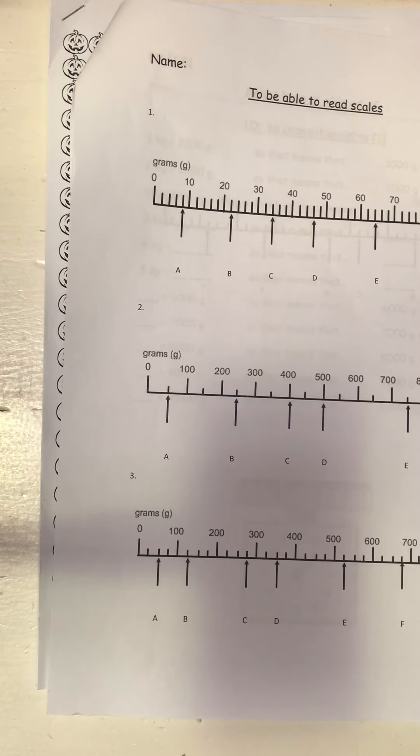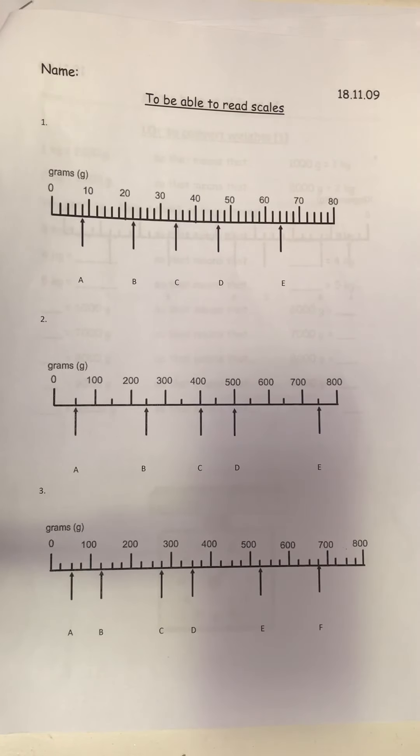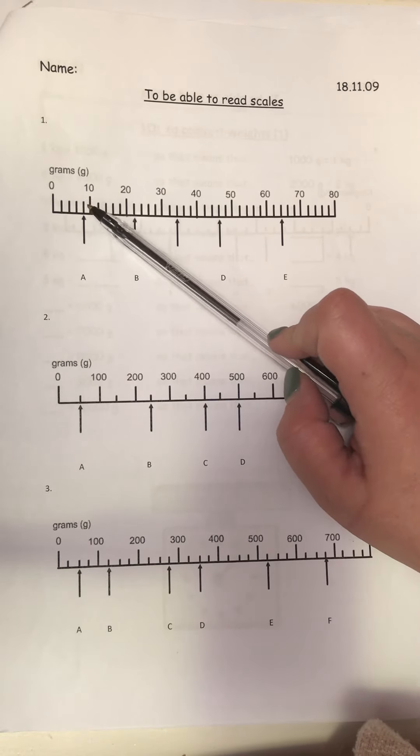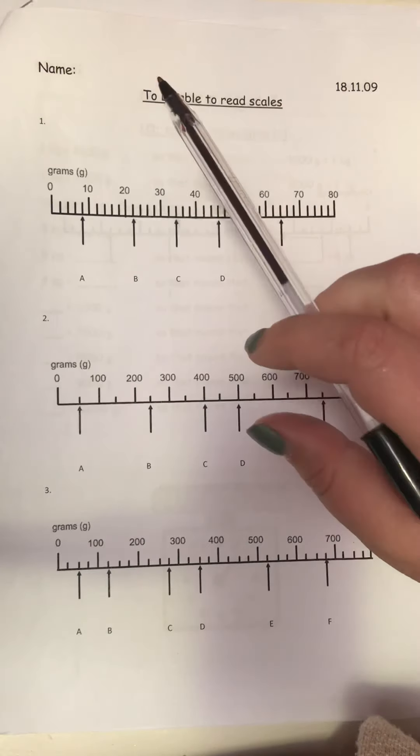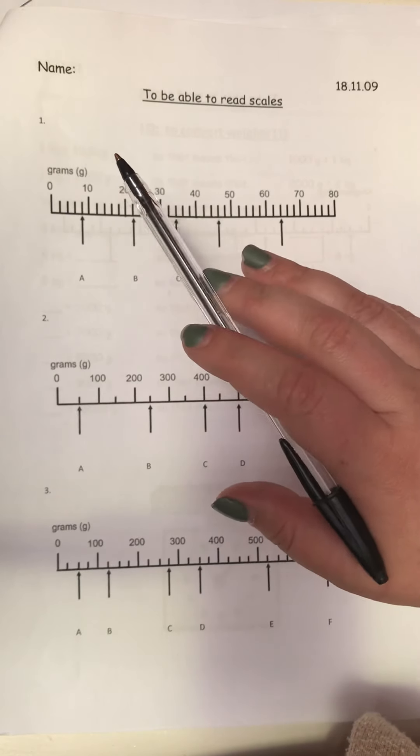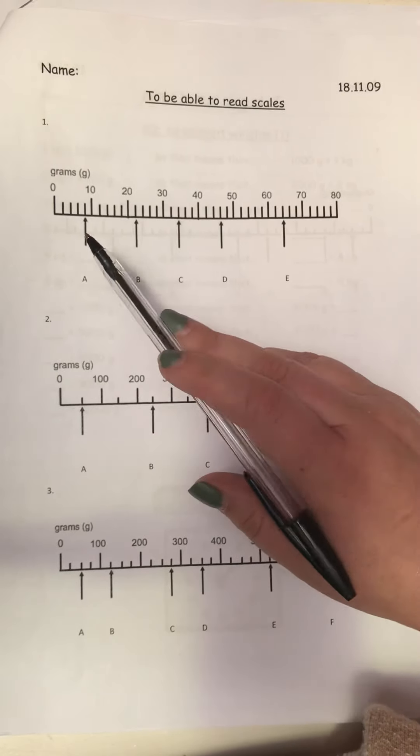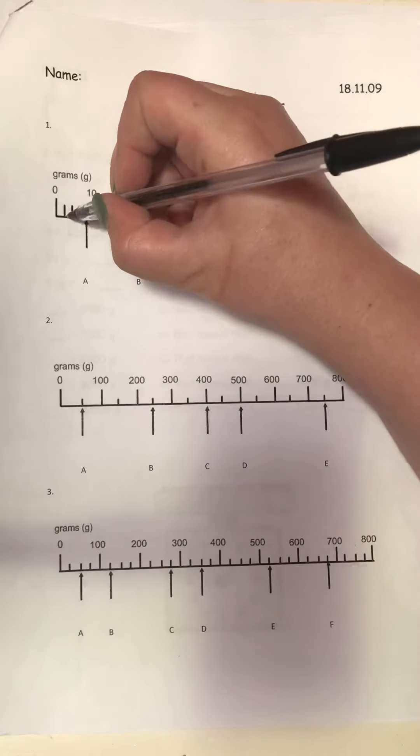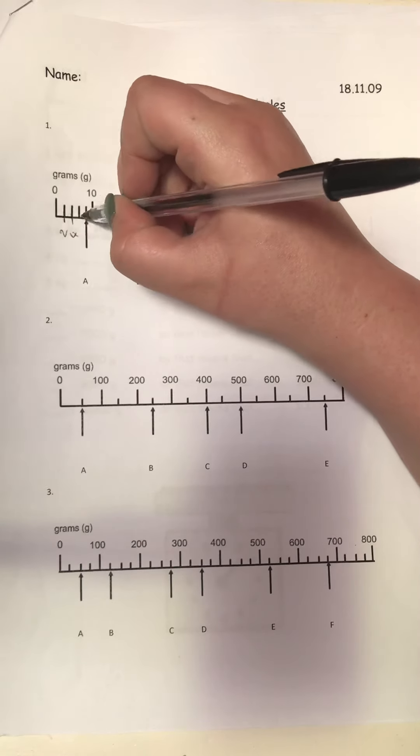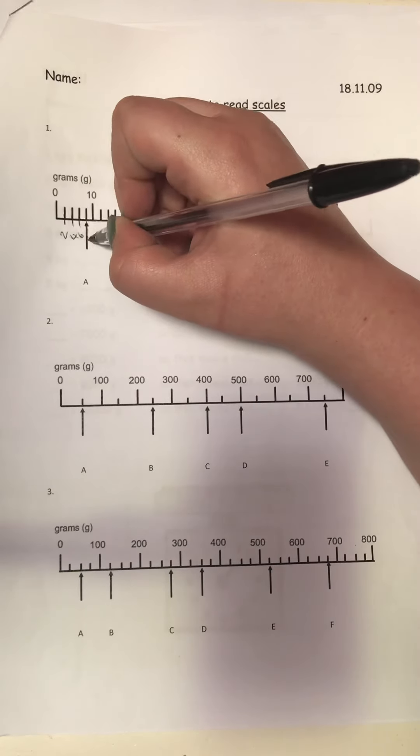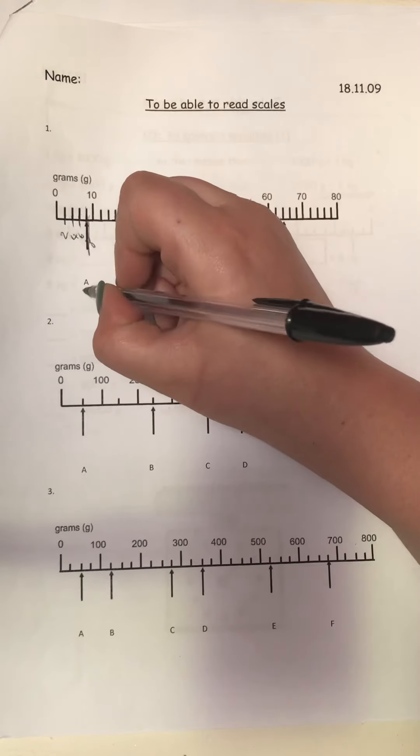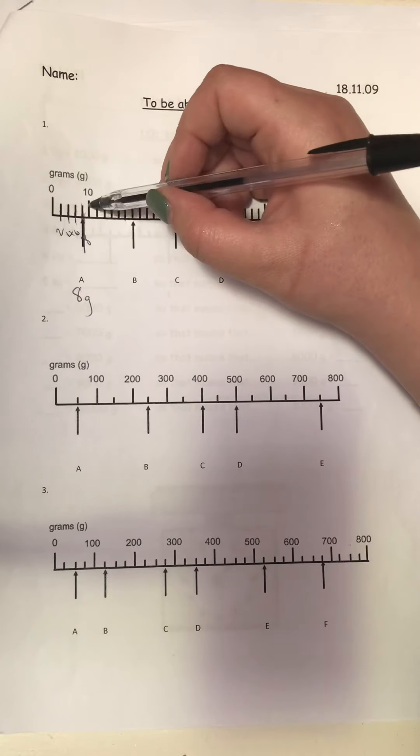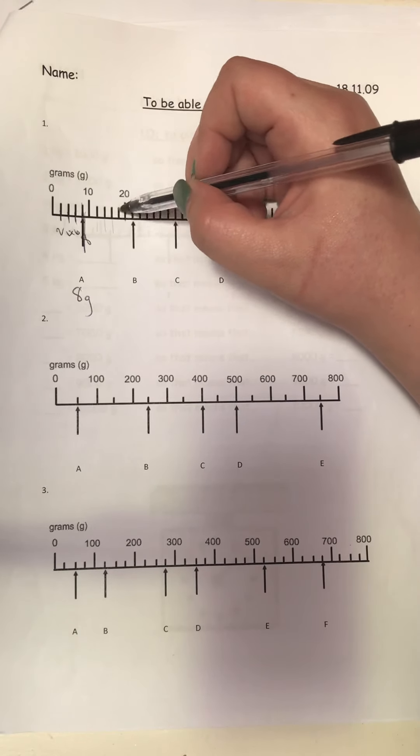This one we must first check how much must we count in. 0, 1, 2, 3, 4, 10. No, it doesn't make sense. Next one: 0, 2, 4, 6, 8, 10. Yes! So each little line is a 2, 4, 6, 8. So we now know this is 8 grams. If we look at B, counting in twos: 10, 12, 14, 16, 18, 20, 22. 22 grams. And I want you to carry on with that.